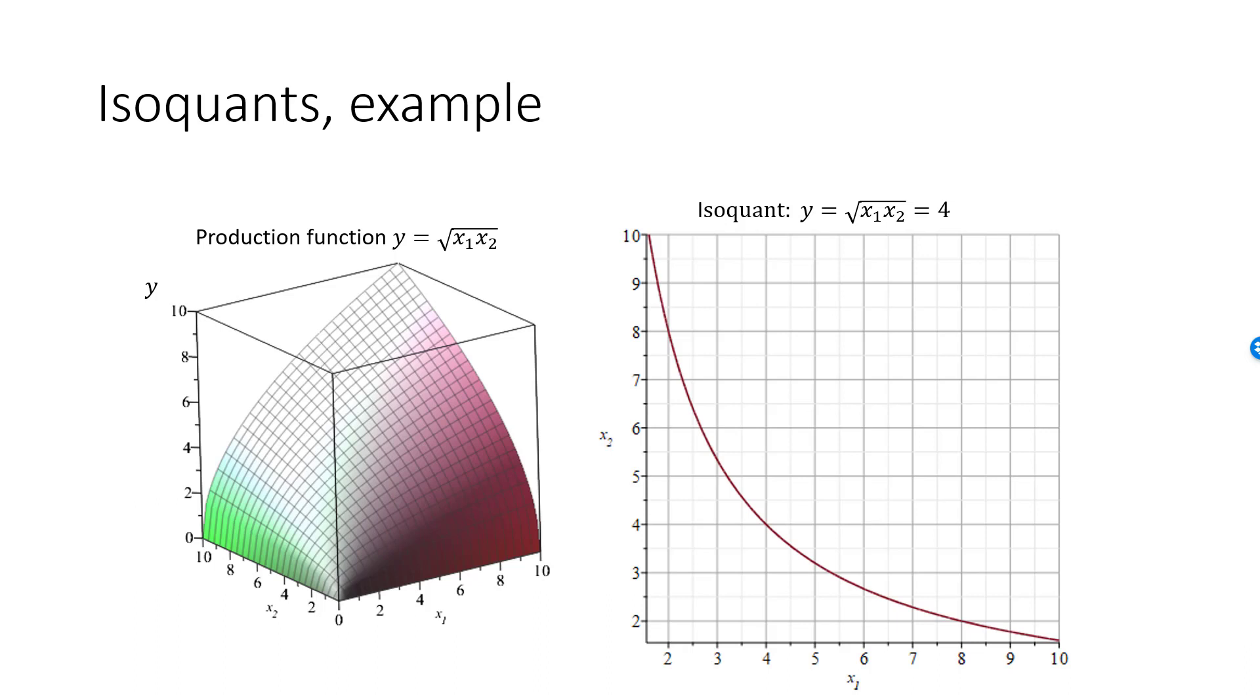If you understood the connection between the utility function and indifference curves, there is really nothing new here. Our production function plays the role of the utility function and the isoquants the role of the indifference curves. The isoquant in this example is the graph of a function, x2 as a function of x1. As an exercise, see if you can figure out what this function is. We will get back to this issue later.